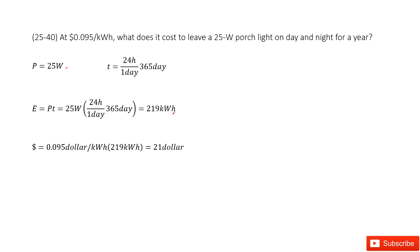It tells you per kilowatt hour the price is 0.095 dollars. So you multiply this price times the total energy, and you get the final answer of 21 dollars.